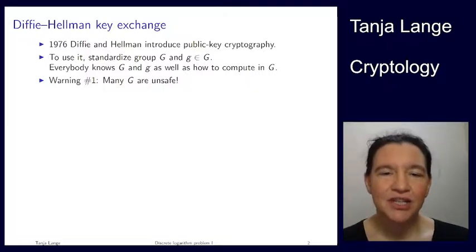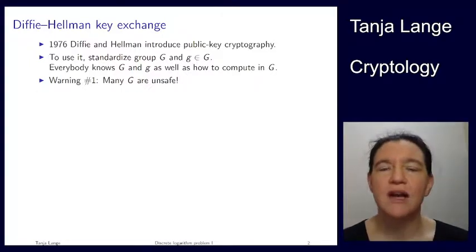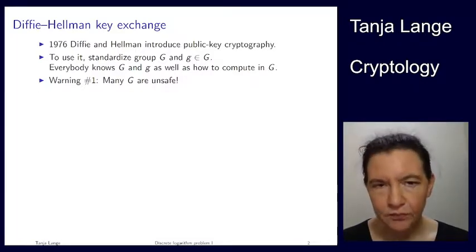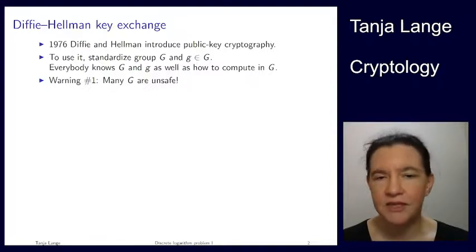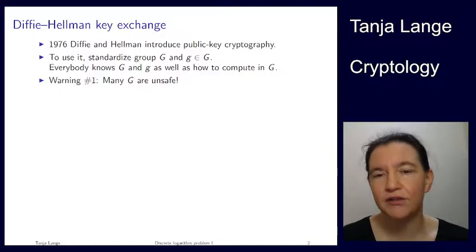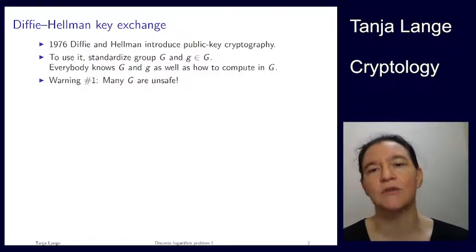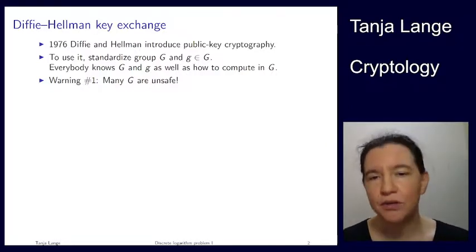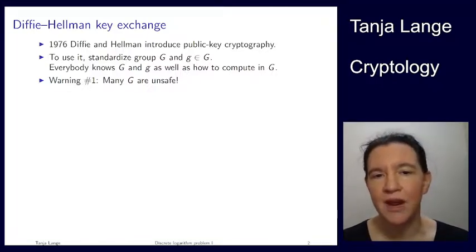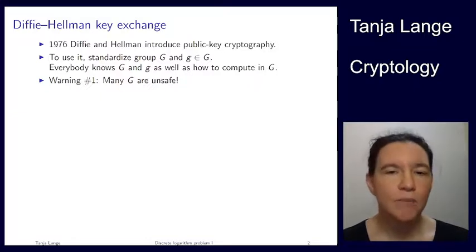Diffie-Hellman key exchange can be written in any group G. Just to have an abstract notation, I'll write G as a group element, but I will move back to the curve groups very soon. Everybody needs to know what this group is and how to compute in it. We've seen a lot of ways to compute: Edwards curves, Weierstrass curves, Montgomery curves. In our case, the group G would be the elliptic curve, and the lowercase g, the group element, would be a point on the curve.